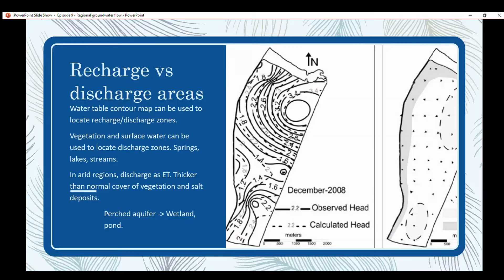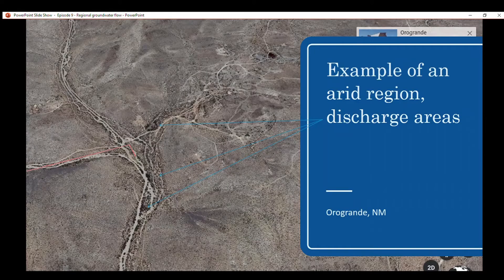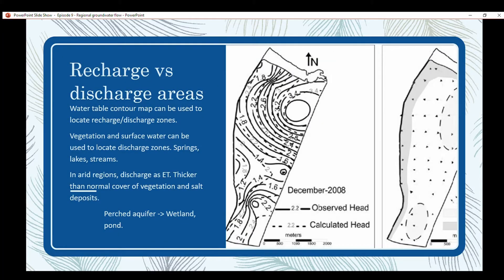The water table contour map can be used to locate recharge and discharge zones. Vegetation and surface water can be used to locate discharge zones. Obviously, vegetation is going to grow where there's water. Springs, lakes, and streams are discharge zones. When we're talking about surface water, we're talking about springs, lakes, and streams.